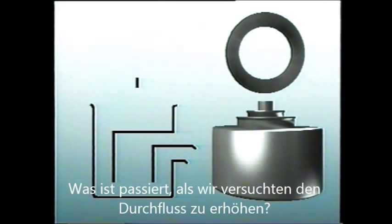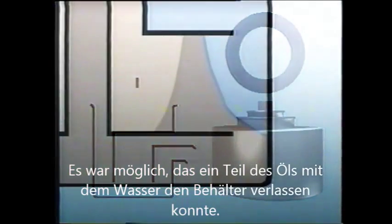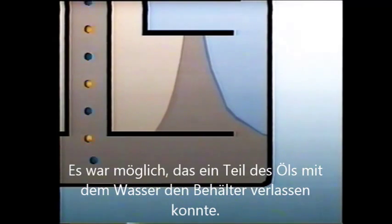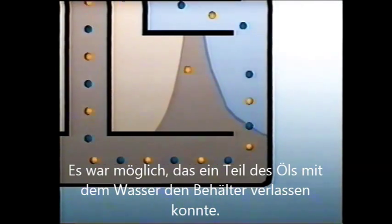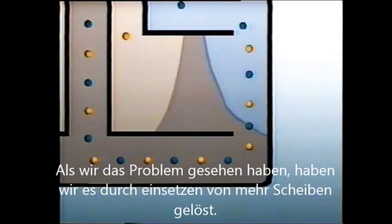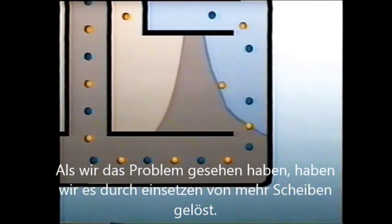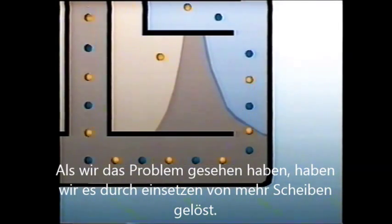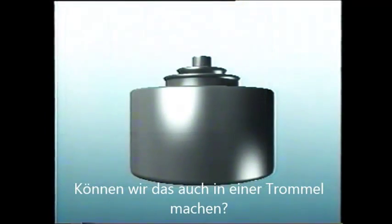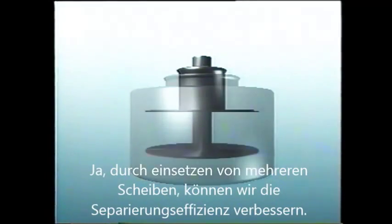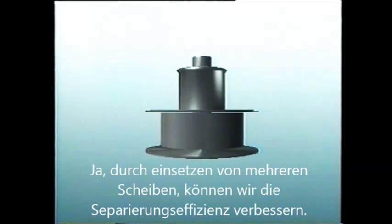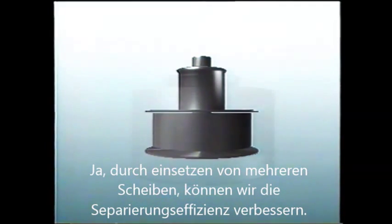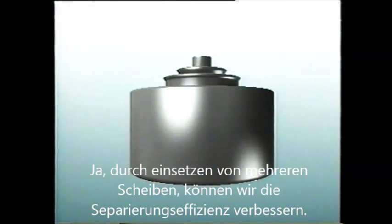What happened before when we tried to increase the rate of feed? There wasn't enough time for separation to take place, so a large proportion of the oil will still be carried out with the water. But when we encountered the same problem before, we solved it by inserting a series of shallow trays. Can we adapt this principle to the bowl? Yes — by turning the trays into cylinders inside the bowl. This greatly improves separation efficiency.